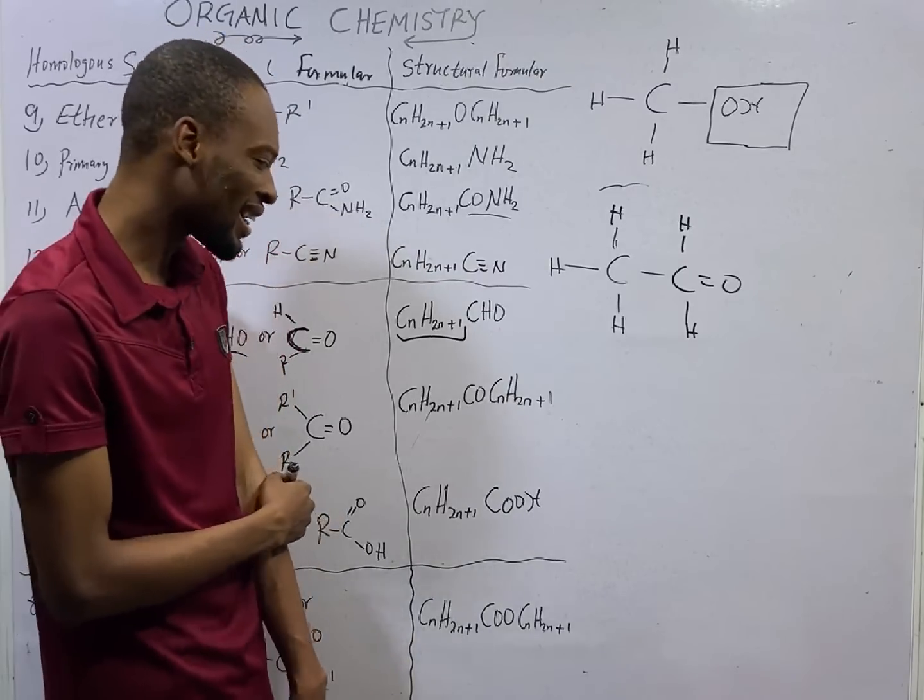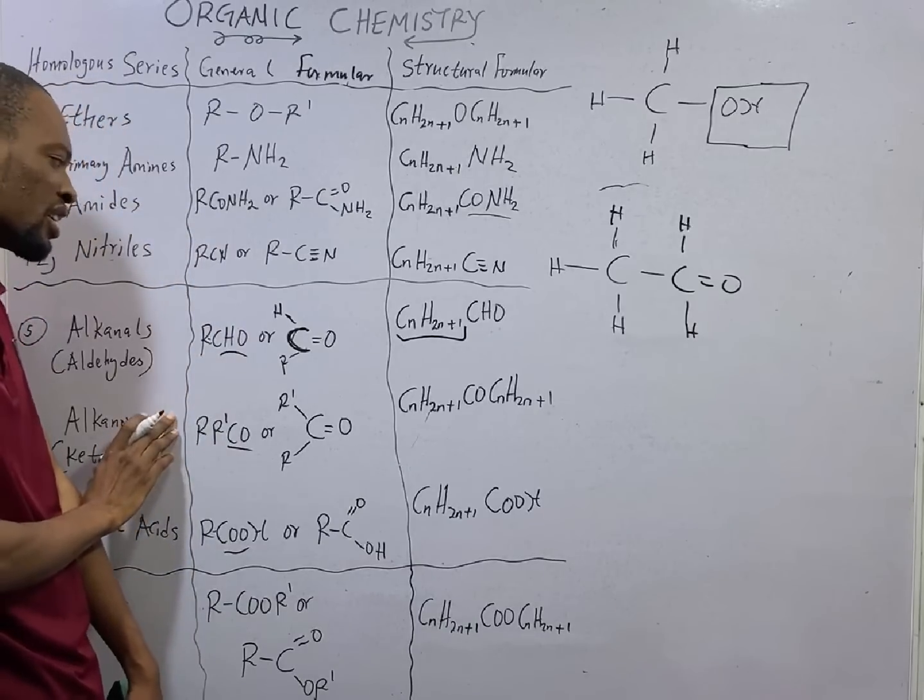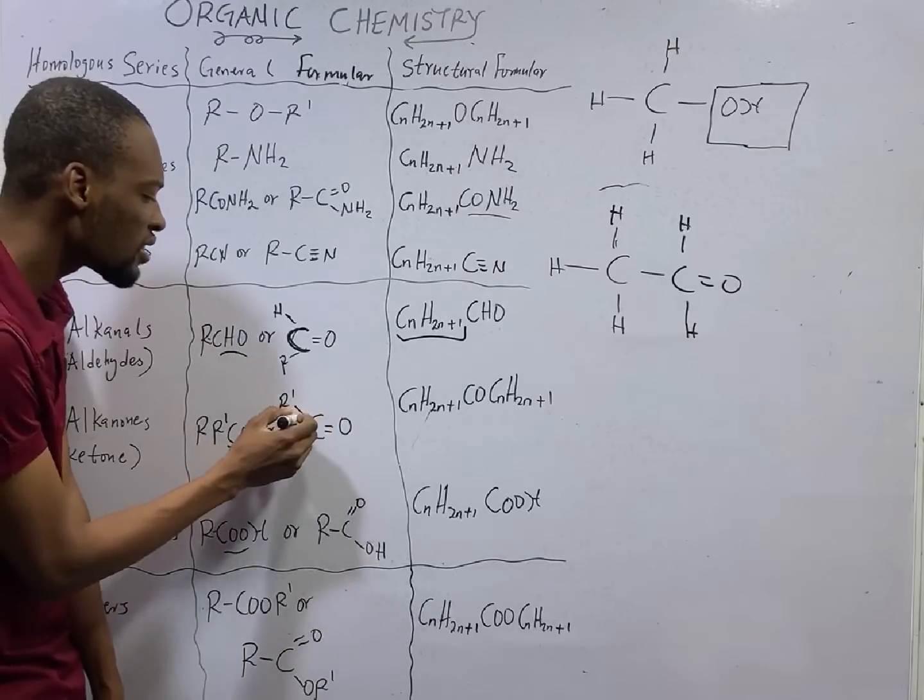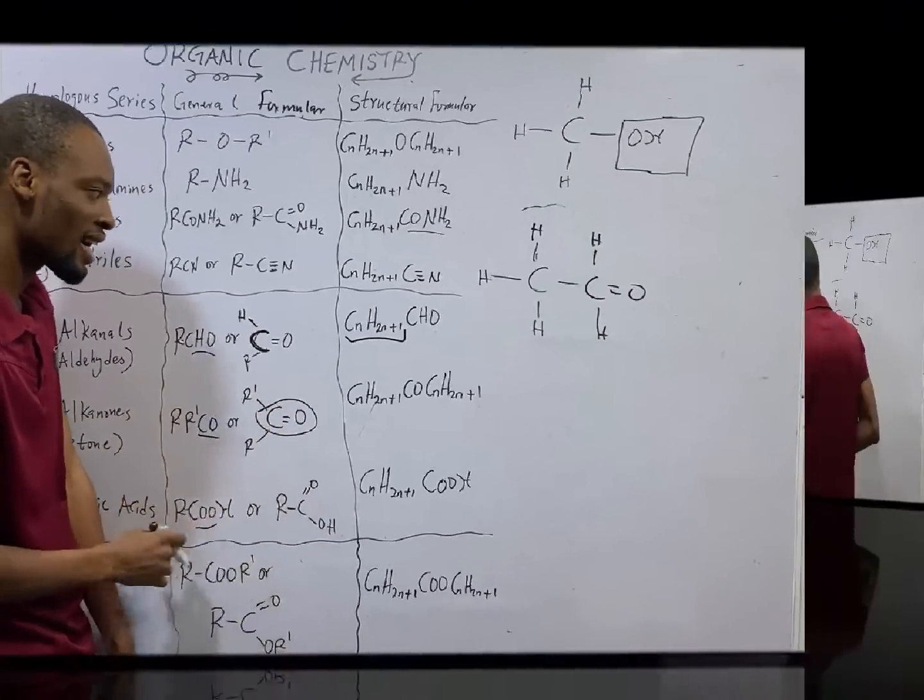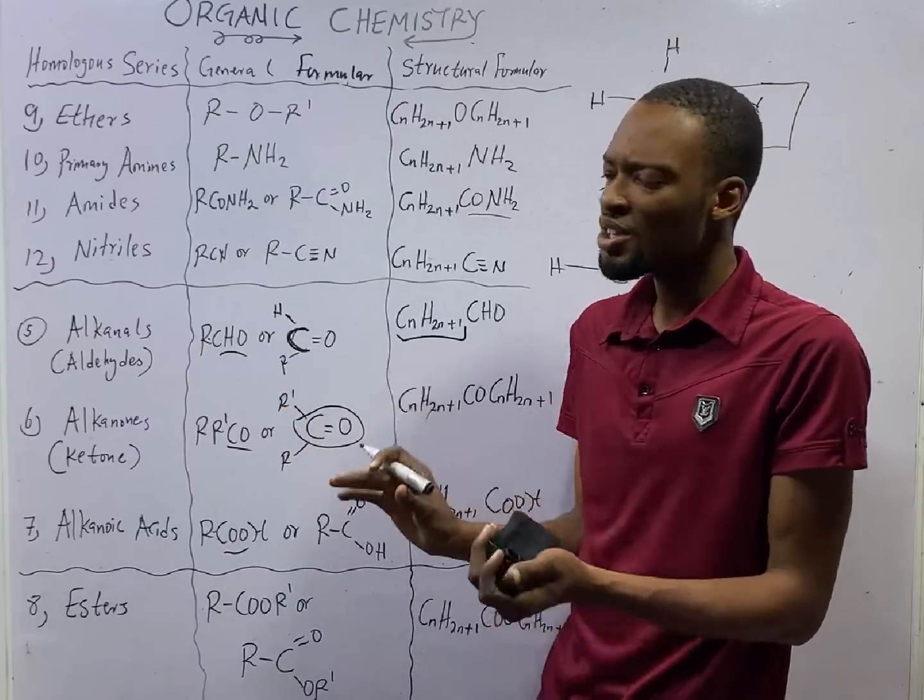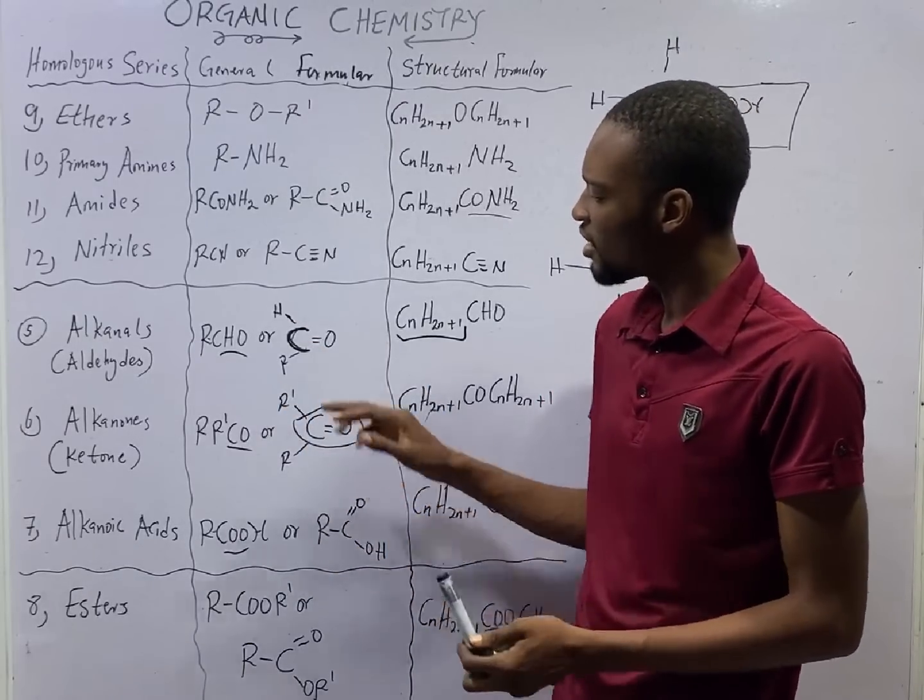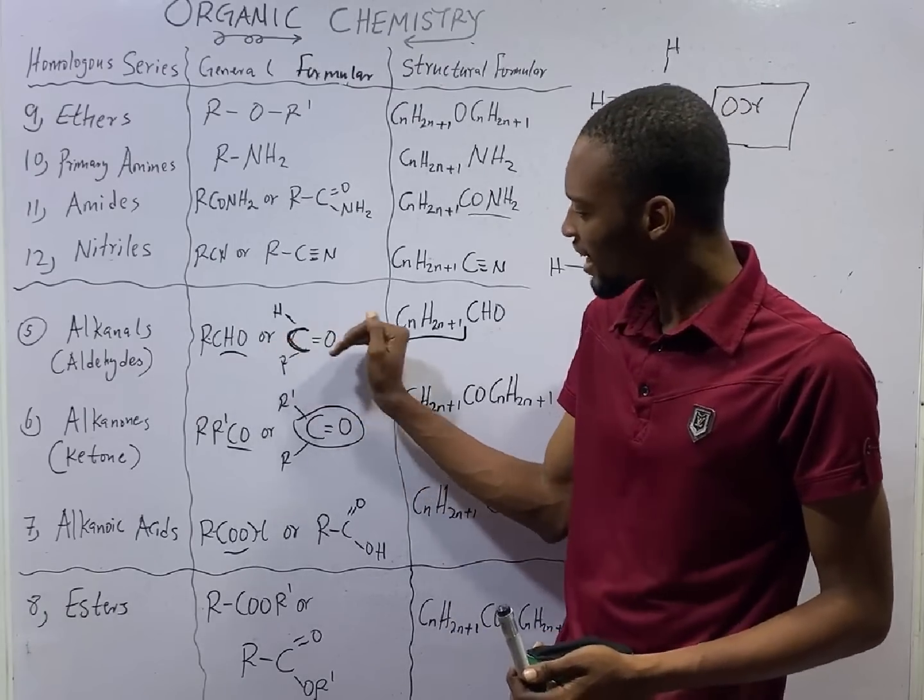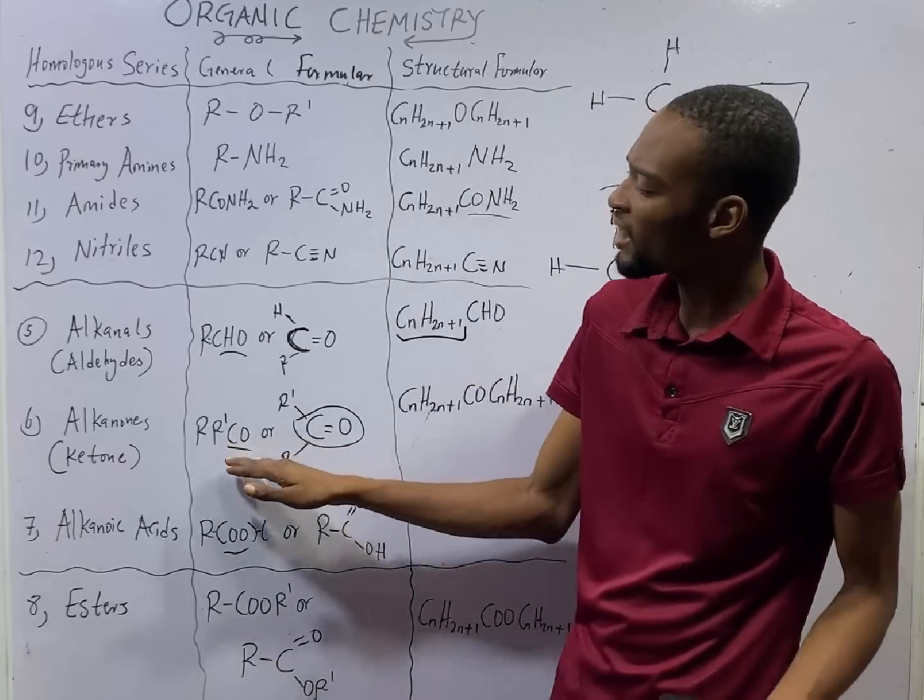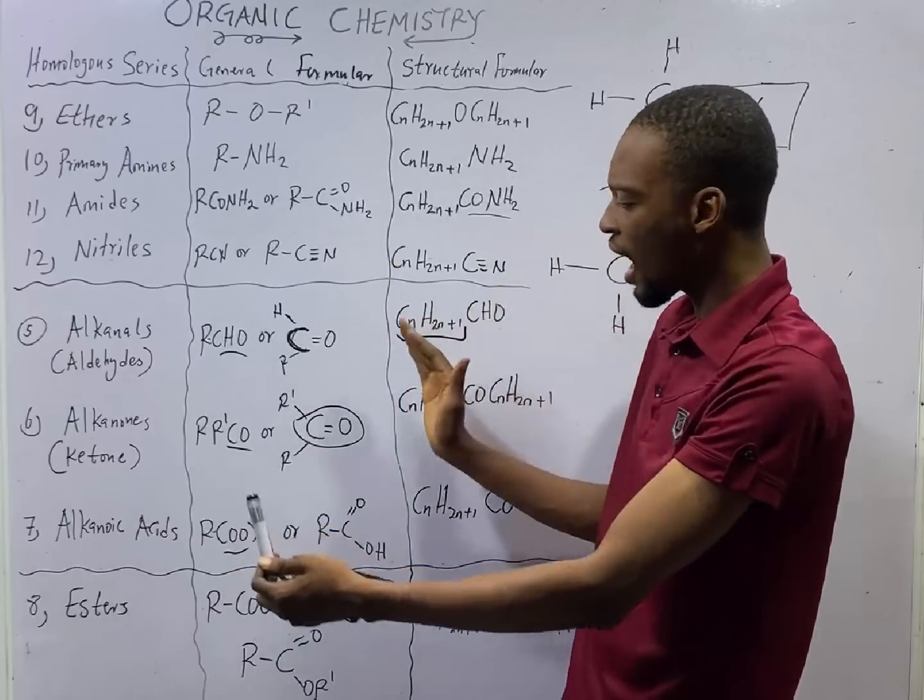Now, look at the difference between alkanals and alkanones. For alkanones, also referred to as ketones, you have the C double bonds to O in between two alkyl groups. Alkanals and alkanones are generally treated together. But the difference between alkanals and alkanones is that the double bond to oxygen, the CO in alkanals is at the end, it is always at the terminal. But for alkanones, the carbon to oxygen bond is at the middle, in between two alkyl groups.